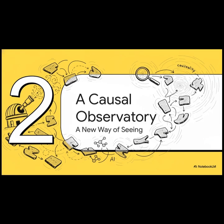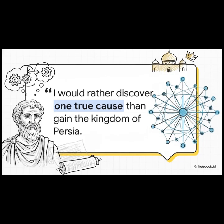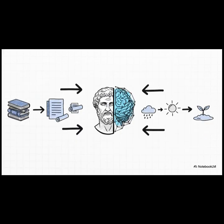You could almost think of it as a new kind of observatory. But instead of looking up at the stars, it's designed to look for the invisible forces of cause and effect. And the ambition here is massive. It's perfectly captured by a quote from the ancient Greek philosopher Democritus — and it is no coincidence that the new system we're about to explore is named right after him. Meet Democritus: a system that's been designed to read and understand absolutely staggering amounts of text, building maps of causality by tapping into the knowledge embedded inside large language models.